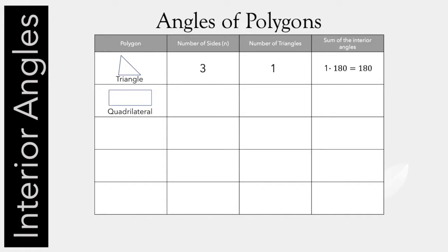Let's check out a quadrilateral. That has four sides. If we draw a diagonal of a quadrilateral, we can split that into two triangles. So we know that there's 180 degrees in one triangle and 180 degrees in the other triangle — two 180s, which equals 360 degrees total in that quadrilateral.